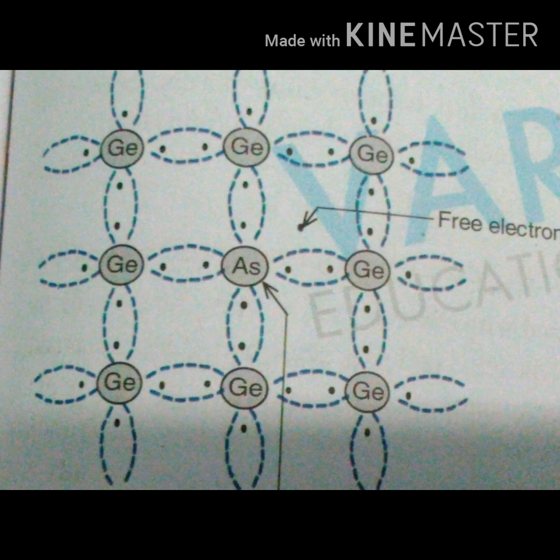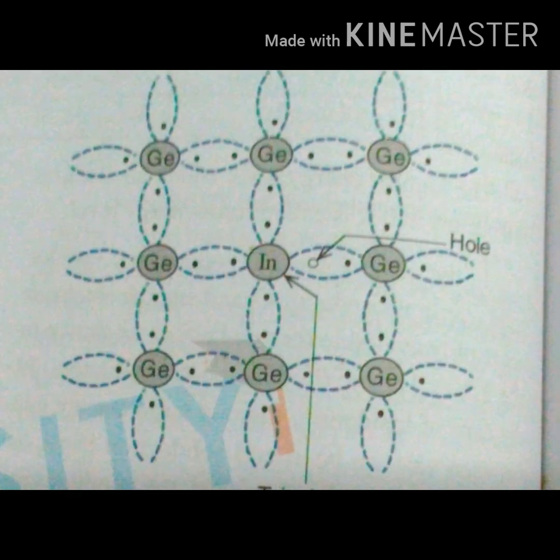P-type semiconductors are those in which semiconductors like silicon, which have four valence electrons, bond with trivalent impurities like aluminum, which has three valence electrons. Thus, there will be a vacancy which generates a positive charge and tends to gain negatively charged electrons.